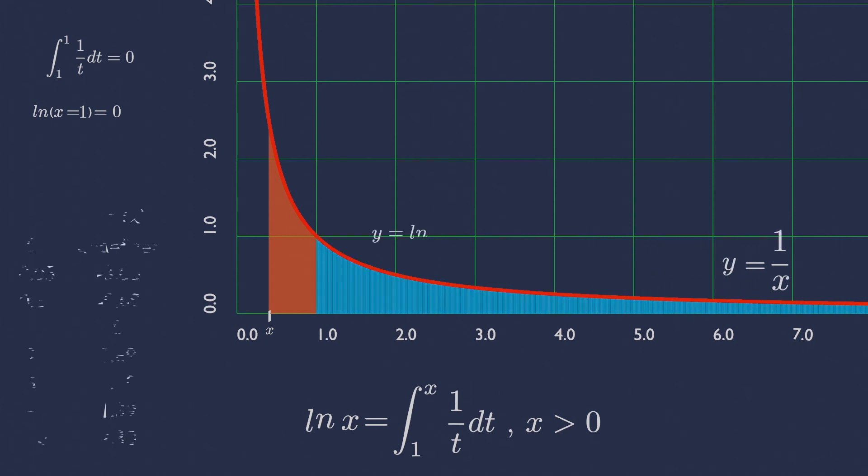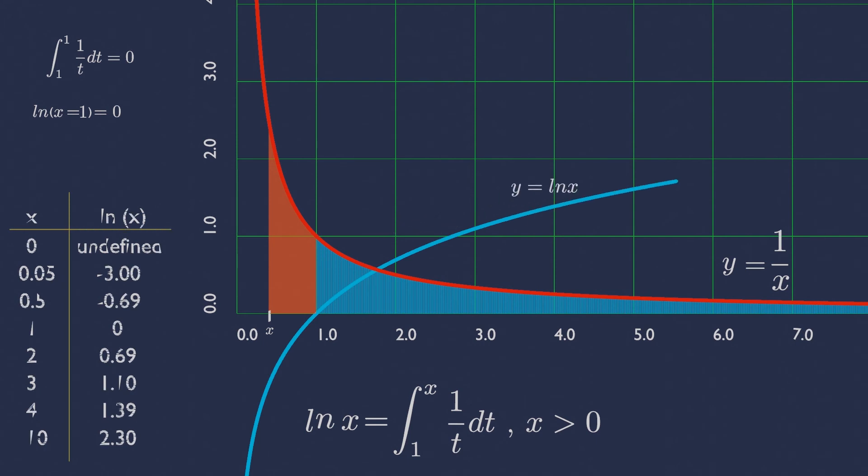Let us generate several values for ln x from 0 to 10. These all values are the area that starts from 1 to any variable x.